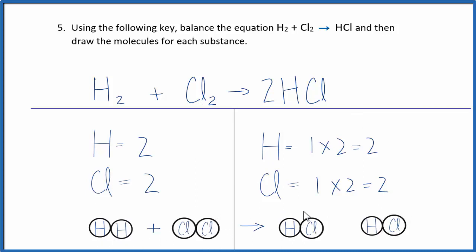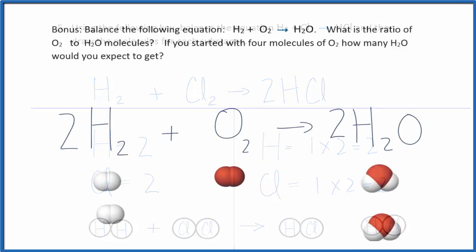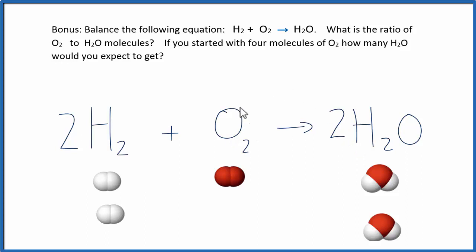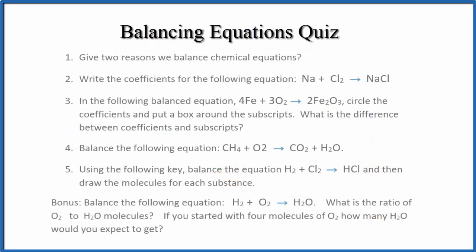For the bonus, we return to our balanced equation for water: two molecules of hydrogen plus one molecule of oxygen gives two molecules of water — a 2:1:2 ratio. These are ratios, and that's really important as you go on in chemistry. For every two molecules of H2, you use one molecule of oxygen; one molecule of oxygen gives two molecules of water. For example, if you're given seven molecules of oxygen, the 1:2 ratio means you'd expect fourteen molecules of water.